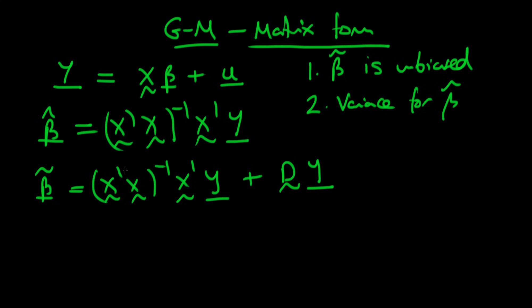In order to do that, first of all we're going to substitute in our Y here in for the Y in our beta tilde. So doing that we can rewrite beta tilde: it's equal to (X'X)^(-1) times X'.